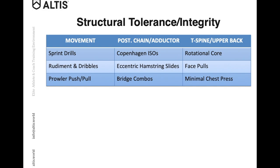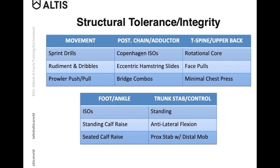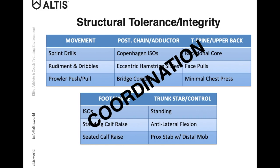Lastly, with the triathlon group, the structural tolerance and integrity work has a lot of considerations. A few key landmarks for me were movement quality, posterior chain and adductor strength, T-spine and upper back mobility and posture, foot and ankle control, and trunk stability and control. It was all underpinned by coordination. A lot of this group specialized in triathlon pretty early, so their general coordination is lacking in many ways. I found it's a really fun piece to target in the weight room — this population really enjoys those challenges. Challenging them coordinatively has seemed to benefit greatly, particularly coming off the bike and getting into the positions needed for an effective run to finish out the course.